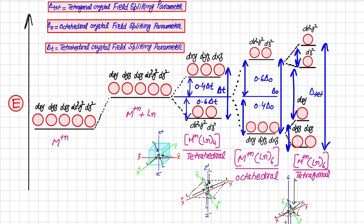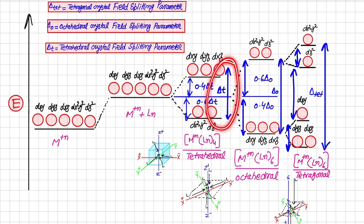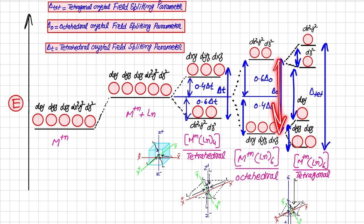It is a good idea to compare these three geometries in a single diagram. The metal d orbitals start at their original energy level. When ligands approach, all orbitals feel repulsion and go high in energy. In tetrahedral geometry, dxy, dyz, and dxz go high in energy whereas dx²-y² and dz² are low in energy. In octahedral geometry there is inversion: dxy, dyz, and dxz become low in energy whereas dx²-y² and dz² go high in energy.